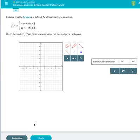This is an example problem of the topic graphing a piecewise defined function, problem type 2. Let's look at our example here. Suppose that the function f is defined for all real numbers as follows. f of x equals the first piece, negative x plus 4.